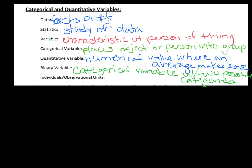The last term is individuals, which you'll also see referred to as observational units. In the AP textbook it says individuals and in the CP textbook it says observational units — I'll use those interchangeably, though I'll try to be consistent with your book. Individuals or observational units are the people or things that are described by data. You're not always going to have people as your individuals — sometimes you'll have animals or something random like M&Ms, so it could be pretty much anything.